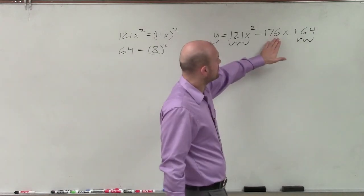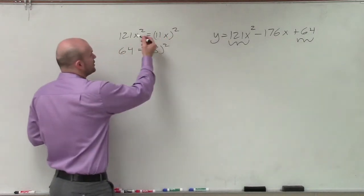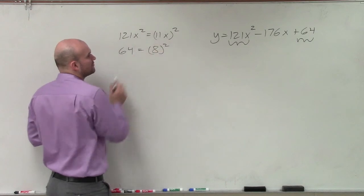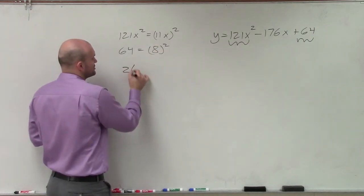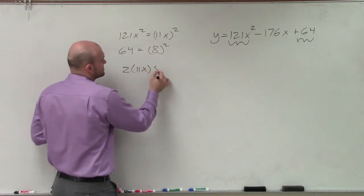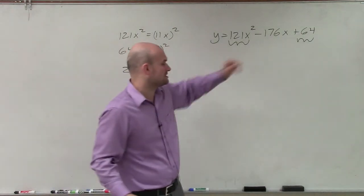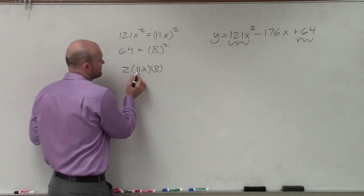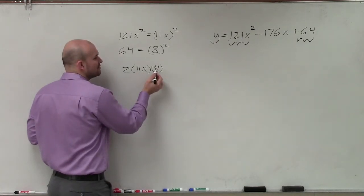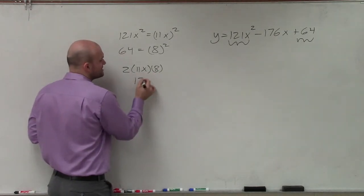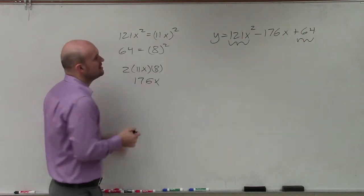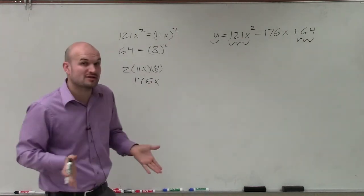However, we need to make sure our middle term is going to be double the square root of both of our first and last term. So it's going to have to be 2 times 11x times 8. That needs to equal 176. Now, obviously, I know that's going to be negative, and we'll talk about that in a second. But if I do 11 times 8, which is 88x times 2, is actually 176x. So this is a perfect square trinomial,